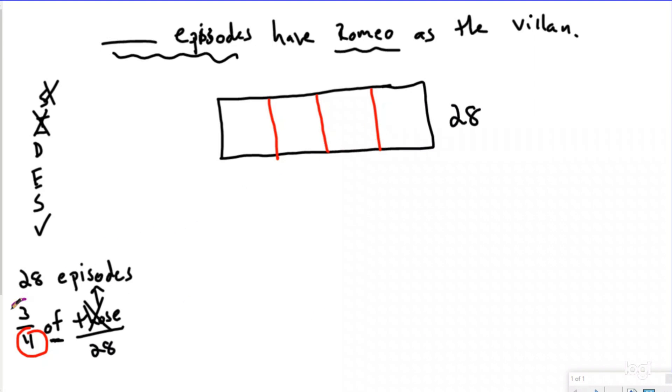And then my numerator, three, tells me that I know that three of these pieces have Romeo as the villain, and then the rest do not. And I know that my statement's asking for how many have Romeo as a villain, which means I'm going to be looking for the total or the value of these three pieces.